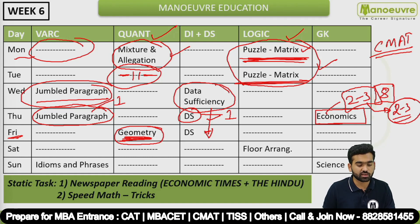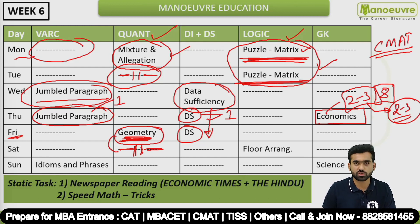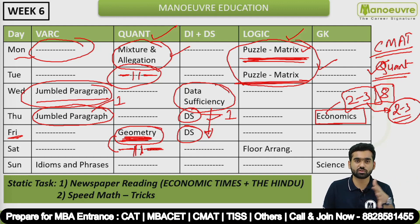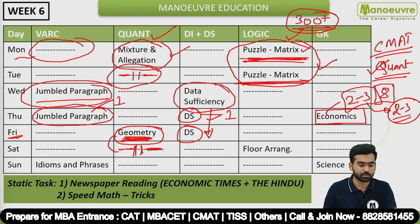On Friday, continue with Data Sufficiency and the remaining Geometry part. My advice is to start Mensuration on Saturday. Focus heavily on Quant and GK — these are the most important sections. GK is one of the easiest sections, so trust me, focusing on Quant and GK can get you 300 plus marks in this exam.